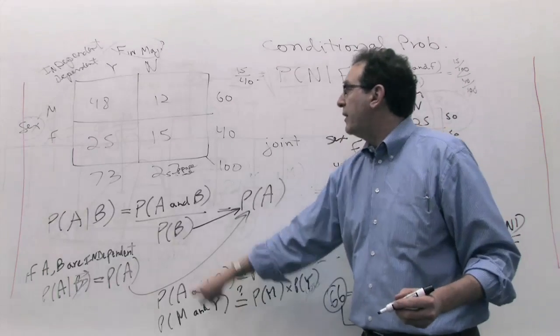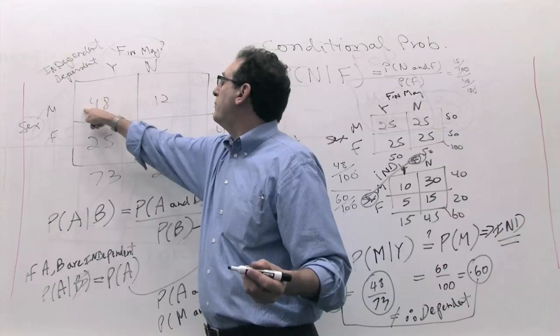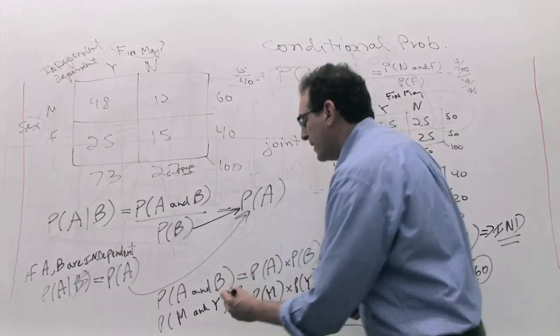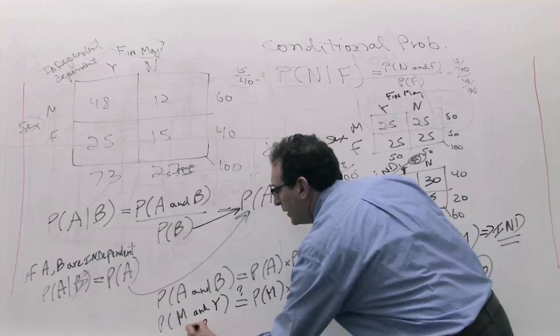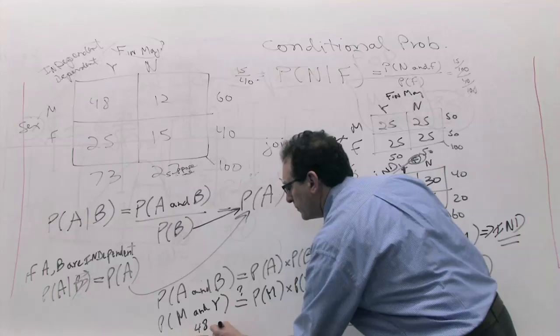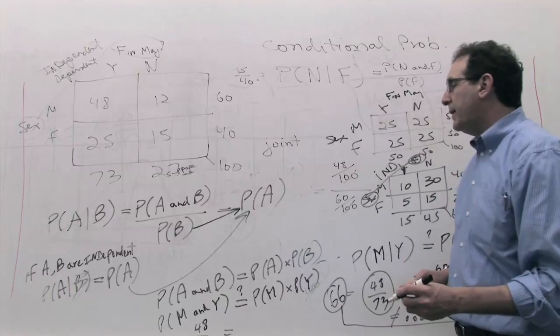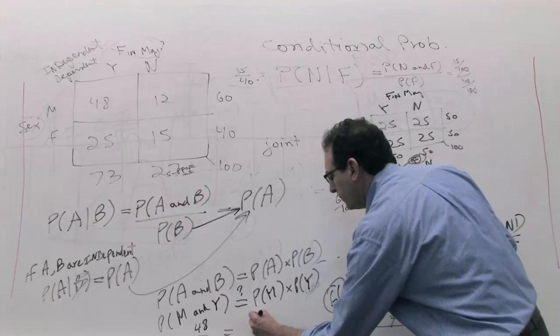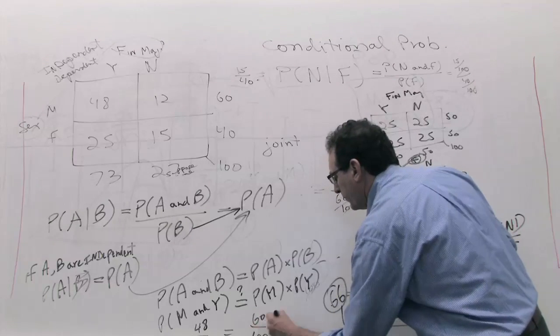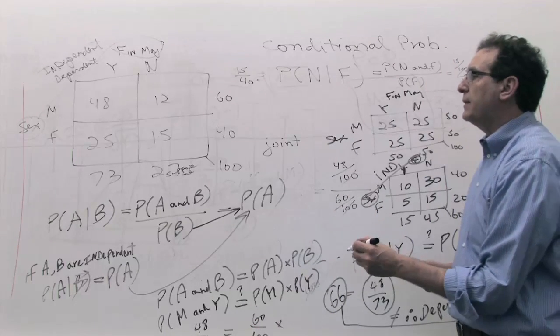So try to prove that males and finance majors equals, I'll put a question mark because we don't know if they're equal. Is it simply the chance of a male by itself times the chance of a finance major by itself? What is male and finance major? 48 divided by 100. How much is M by itself? That's 60 out of 100. And what's the chance of a finance by itself? That's 73 out of 100.